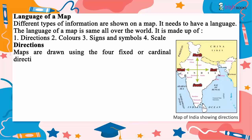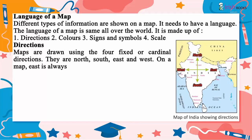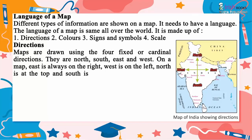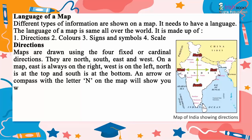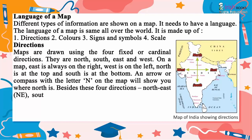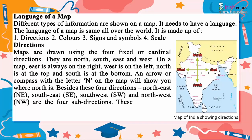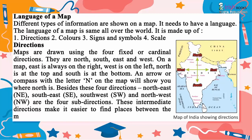Directions. Maps are drawn using the four fixed or cardinal directions. They are north, south, east and west. On a map, east is always on the right, west is on the left, north is at the top and south is at the bottom. An arrow or compass with the letter N on the map will show you where north is. Besides these four directions, north-east (NE), south-east (SE), south-west (SW) and north-west (NW) are the four sub-directions. These intermediate directions make it easier to find places between the major directions.